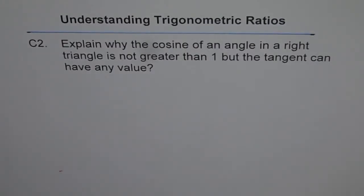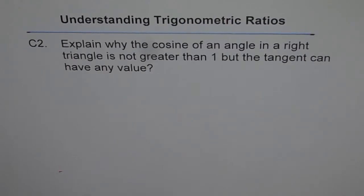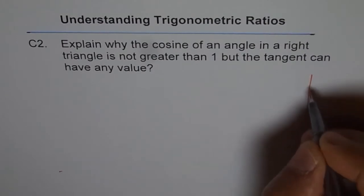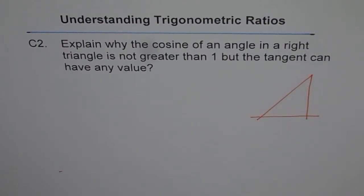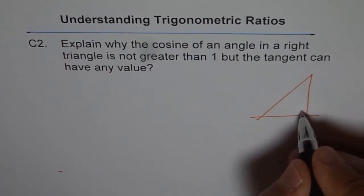This is a communication question to explain why the cosine of an angle in a right triangle is not greater than one, but the tangent can have any value. That's a very important question when we're trying to understand trigonometric ratios, and it gives you the range of sine, cosine, and tangent. To understand this, let's look at our right triangle.